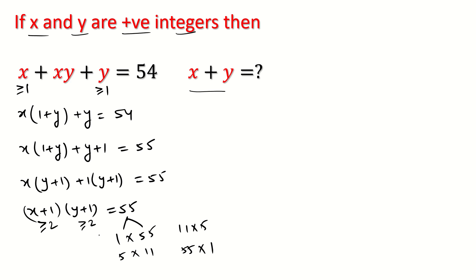So from this condition, the first and last case cancel out, and we have two cases. Case first: if x plus 1 is 11, so y plus 1 is 5. Case second: if x plus 1 is 5 and y plus 1 is 11.